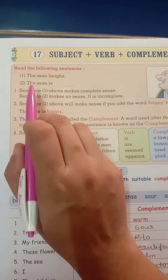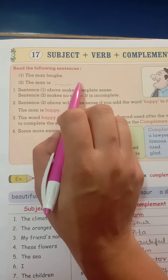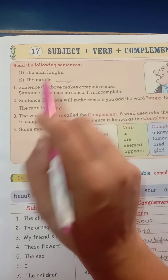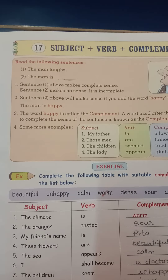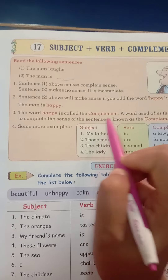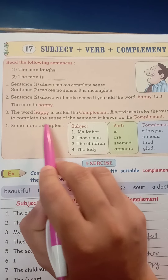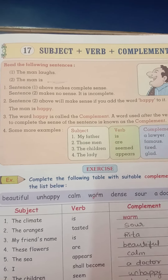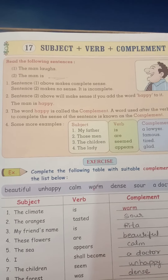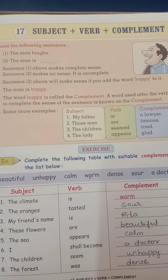Sentence two will make sense if you add a word like 'happy.' So if you write 'The man is happy,' or 'The man is sad,' or 'The man is laughing,' the sentence makes sense and has a complete meaning. The word 'happy' is called the complement. A word used after the verb to complete the sense of the sentence is known as the complement. The word we use to tell something about the subject — that is the complement.